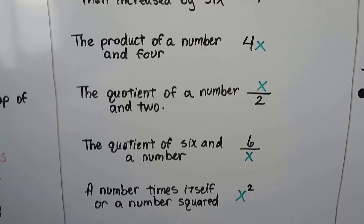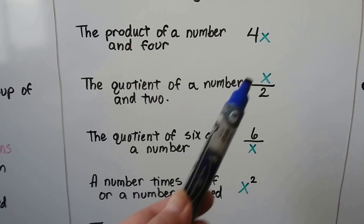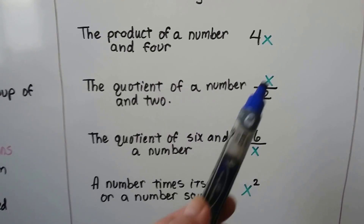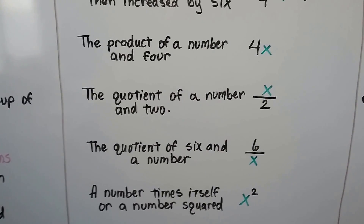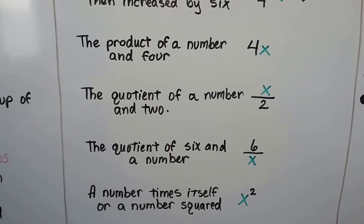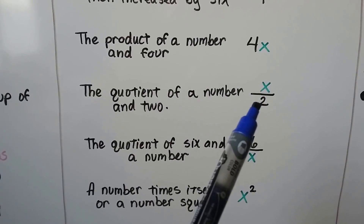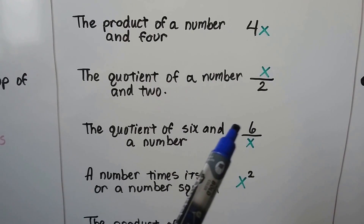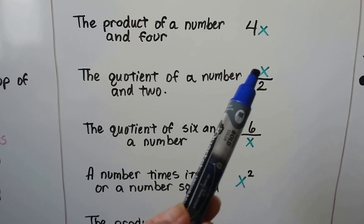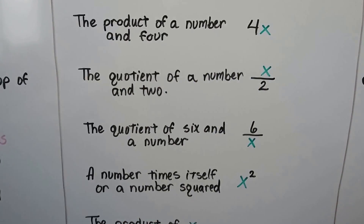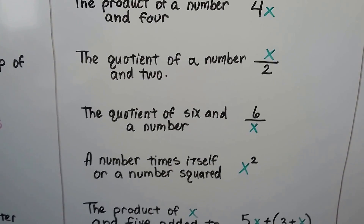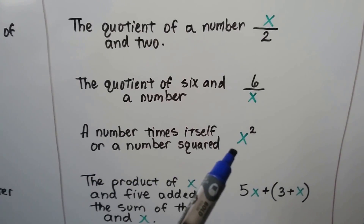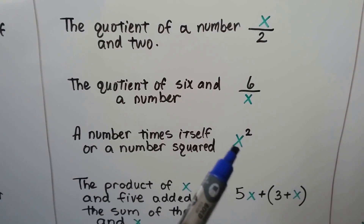The quotient of a number and 2 means division. We could say x divided by 2, but in algebra it's easier to write it as a fraction because fractions are little division problems. If it says the quotient of 6, then 6 is the numerator. If it says the quotient of a number, then x is the numerator. A number times itself, or a number squared, would be x squared — it's x times x.